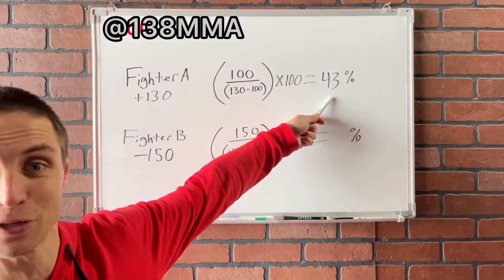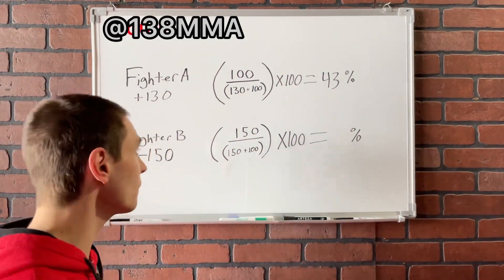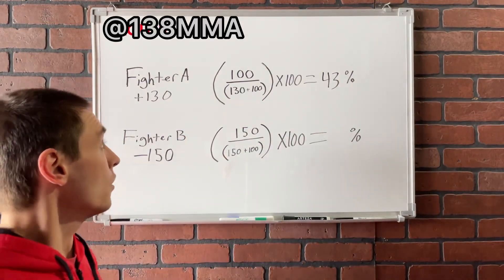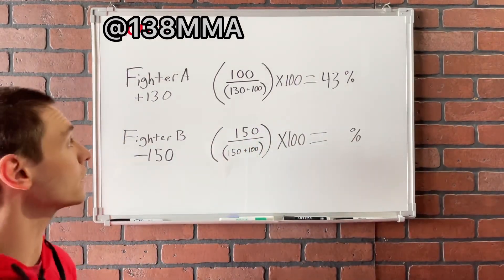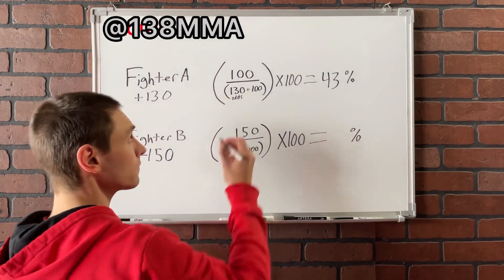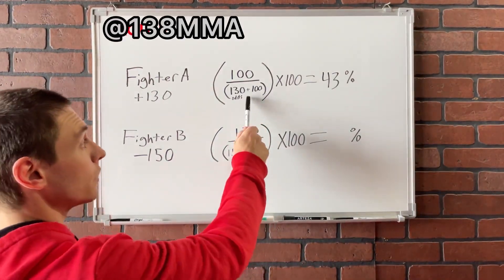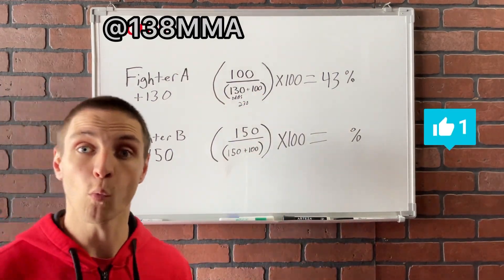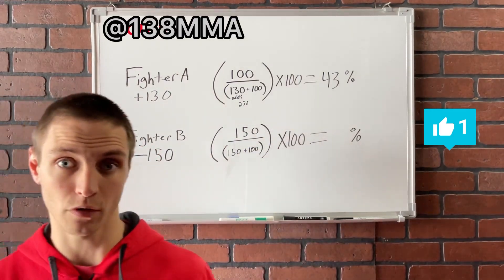Now I've already calculated this one out because it's a much harder calculation, but we're going to go over how we got there and then I'll do this one. So what we're going to do here, we'll start with the underdog, fighter A. First thing you want to do is you want to go inside the parentheses and then inside the second set of parentheses because that's how that works. You take the odds, which currently is 130, so you take the odds and then you add that to 100 to get 230. So you have 230 here.